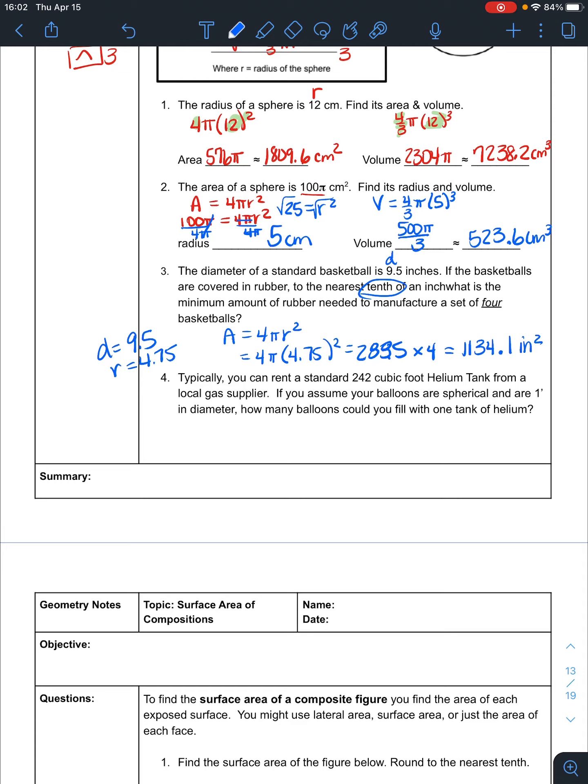You can rent a standard 242 cubic foot helium tank from a gas supplier. If you assume your balloons are spherical and are one foot in diameter, how many balloons can you fill with one tank of helium? We need to find the volume of the balloon. The volume would be 4 thirds pi r cubed. Remember, r would be half a foot, so 0.5 cubed. We do 4 times pi times 0.5 cubed all divided by 3, and we get the volume of one balloon is 0.524 cubic feet.